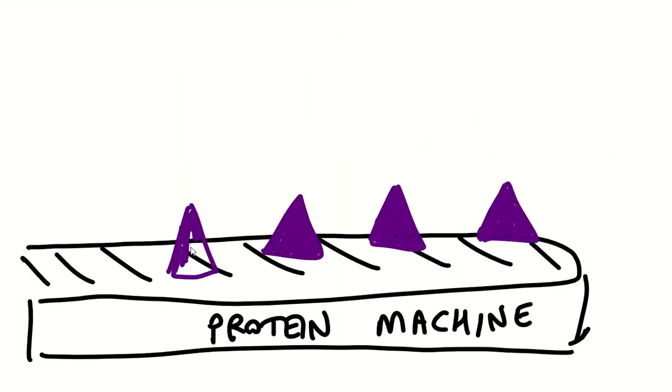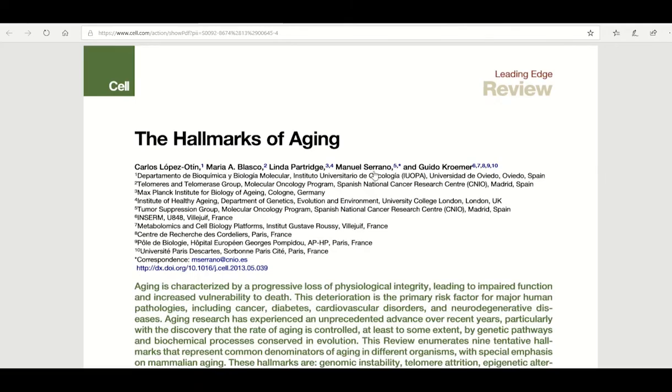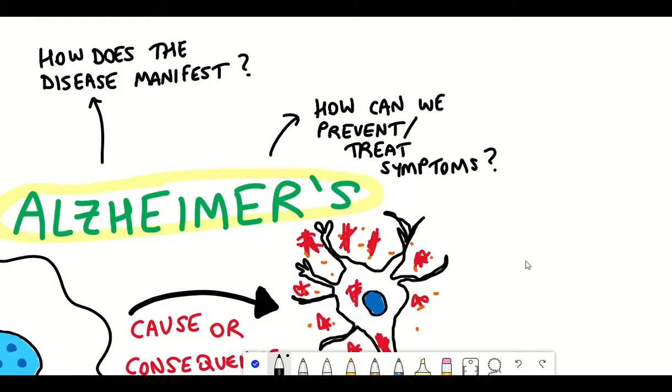The loss of proteostasis and accumulation of protein aggregation is one of the hallmarks of aging, which given that Alzheimer's disease is an age-related disease is a good indication of the molecular underpinning. But it still doesn't really give us much information as to how the disease develops.